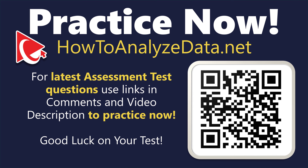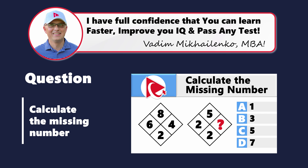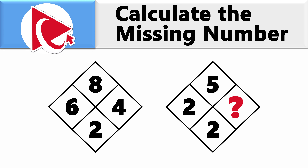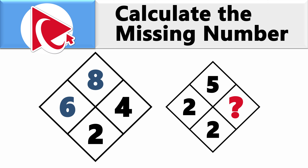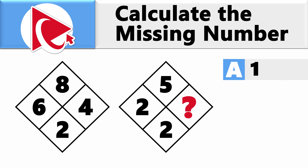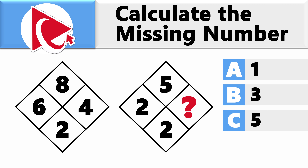Now grab your thinking goggles — this question is so intricate Sherlock Holmes would need a cheat sheet. You're presented with two diamonds, each with four numbers inside. In the first diamond: 8, 6, 2, and 4. In the second diamond: 5, 2, 2, and the missing number. Select from: Choice A, 1; Choice B, 3; Choice C, 5; Choice D, 7.